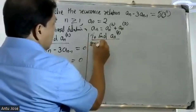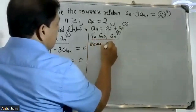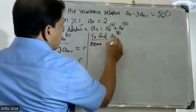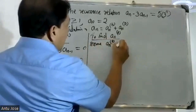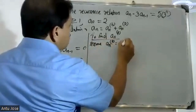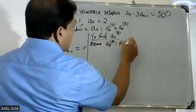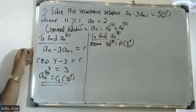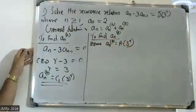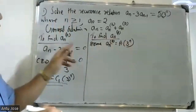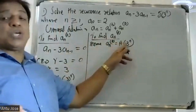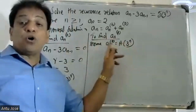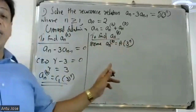To find the particular solution a_p, we assume a_p = A·3^n.